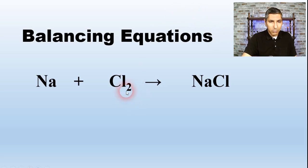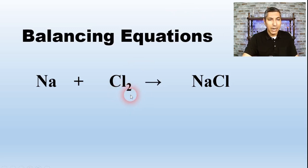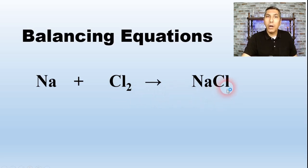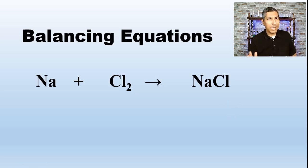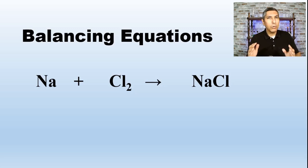You might notice that on the reactant side, which is the left side of the arrow, we have two chlorine atoms right there, represented by the subscript 2 for Cl. On the product side of the reaction, we only have one chlorine atom. So the question is: what happened to the other chlorine atom? Did it get destroyed? Did it somehow disappear? Well, we know that's not possible, because there's this thing in chemistry called the law of conservation of mass.